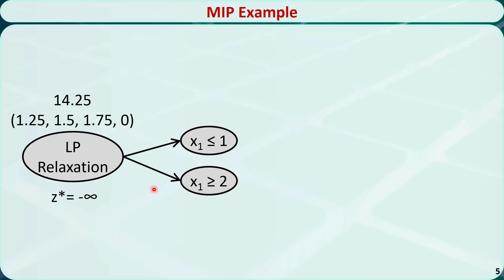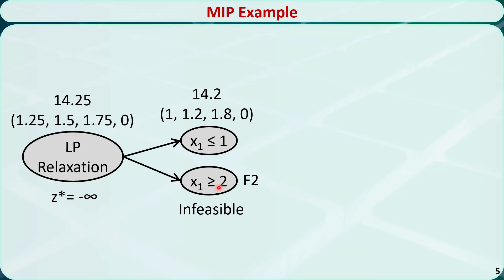Accordingly, the original problem is split into two subproblems. One is the original linear programming relaxation with an additional constraint x1 ≤ 1. The other is the original linear programming relaxation with an additional constraint x1 ≥ 2. Let's solve these two subproblems using the simplex method. We find that the x1 ≥ 2 subproblem is infeasible, so it is fathomed based on test 2. The optimal solution to the x1 ≤ 1 subproblem is x1 = 1, x2 = 1.2, x3 = 1.8, x4 = 0, and the z value is 14.2.